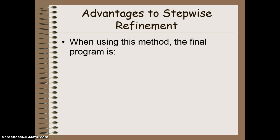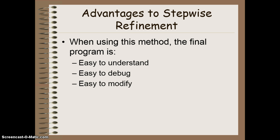When you use this particular method, it's very advantageous because your final program is easy to understand — it's all broken up into very specific sections with very specific requirements and purposes. It's easy to debug because when you get an error, it's very specific as to where that error occurs — it's in a particular method with a very particular role. And finally, it's very easy to modify because you can go in and modify any of those helper methods to fix or update your program.